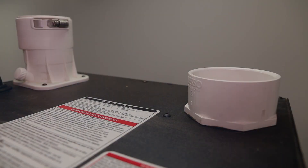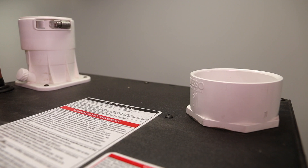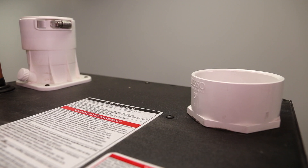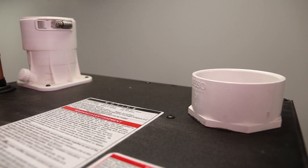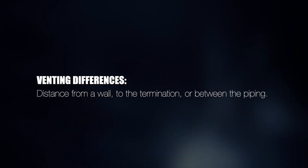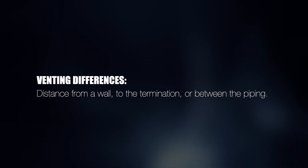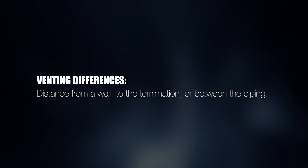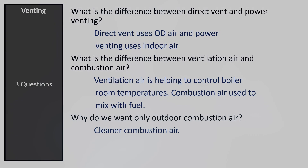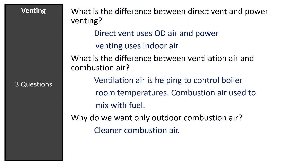All of our high efficiency boilers vent very similar, with possible minor differences usually being distance from a wall to the termination or between the piping. U.S. Boiler has some cast iron products that are direct vent or power vented, and all U.S. Boiler high efficiency boilers are built and sold as direct vent boilers only.